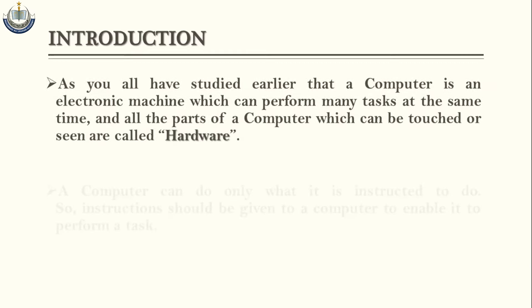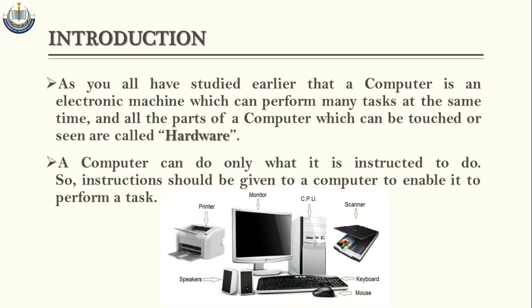First, let's review what you have learned in your previous class. A computer is an electronic machine which can perform many tasks at the same time. All the parts of a computer which can be touched or seen are called hardware — for example, monitor, keyboard, speakers.